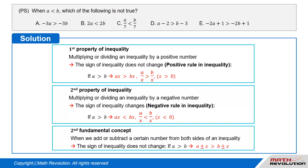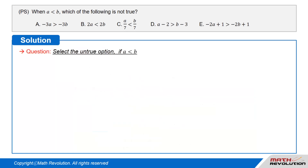The second fundamental concept in inequality: when we add or subtract a certain number from both sides of the inequality, the sign of inequality does not change. So if we add or subtract x from both sides of an inequality, it does not affect the inequality sign. If a is greater than b, then a plus or minus x is greater than b plus or minus x.